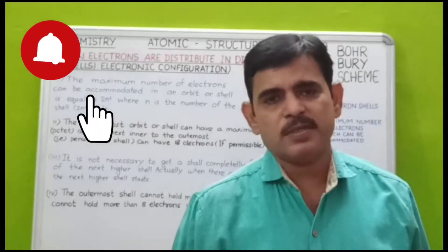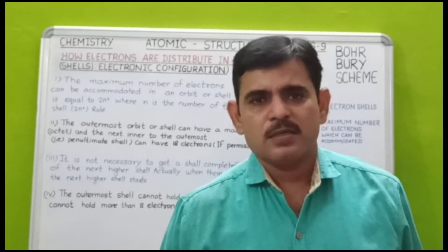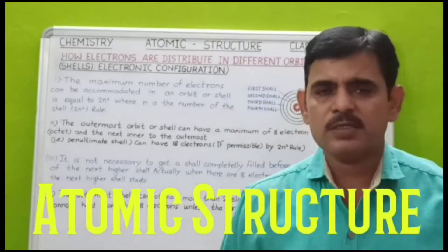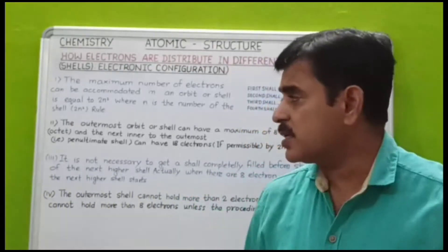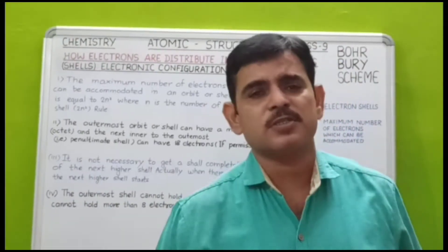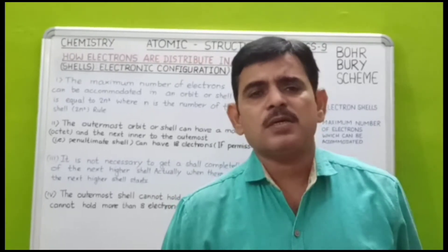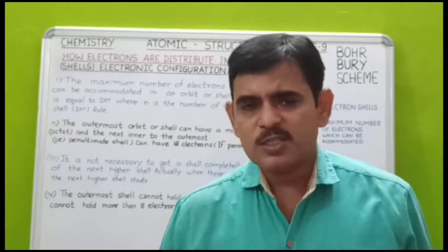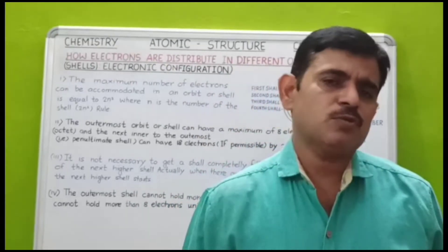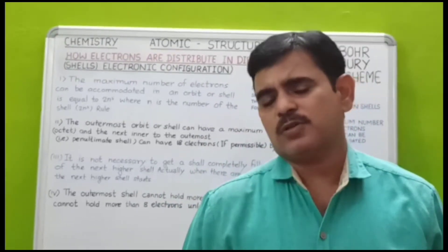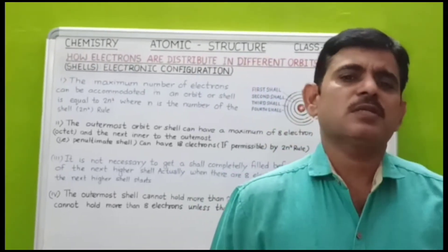Hello students, today we will start Class 9th Science Chemistry, and let us start with atomic structure. Atomic structure में क्या क्या होता है, सबसे पहले जानते हैं कि atomic structure होता क्या है। आपने सुना होगा कि परमाणु सबसे छोटा कण होता है — atom is the smallest particle in the whole world. उससे छोटा हमें कुछ दिखाई भी नहीं देता, क्योंकि उसे हम अपनी आँखों से नहीं देख सकते।